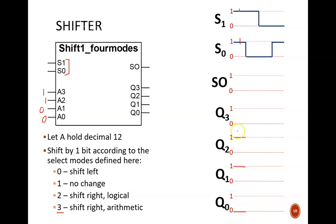A0 becomes the shift out, so SO is low. Finally, what to do about Q3? This is an arithmetic shift, so the leading bit needs to remain the same. Therefore, Q3 is high.